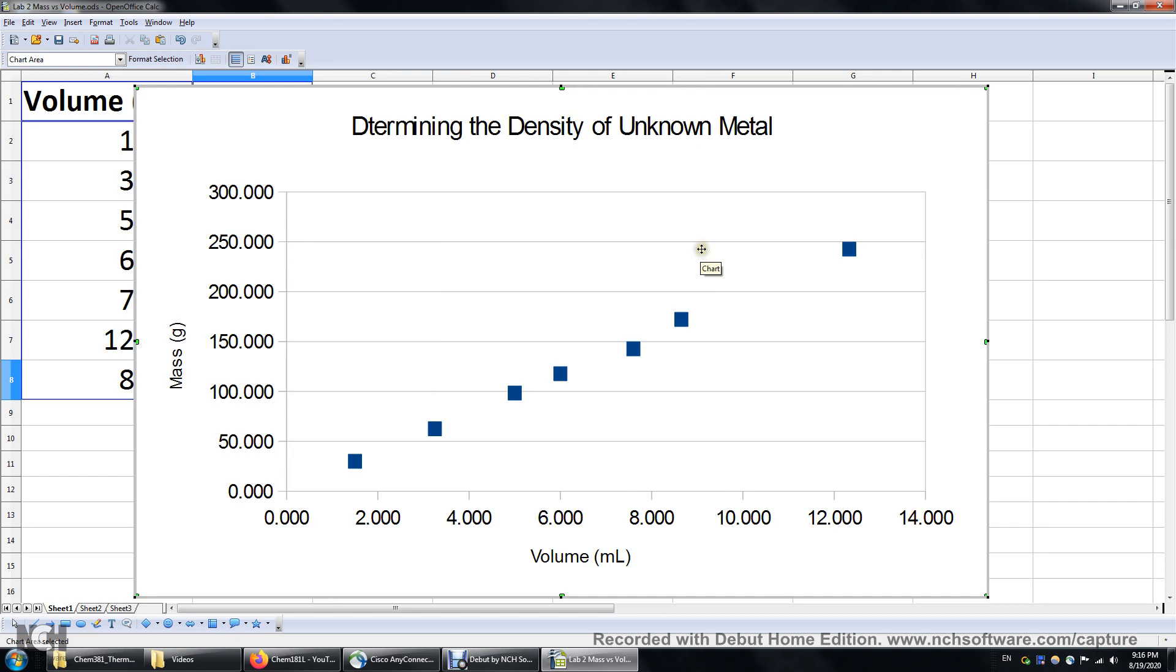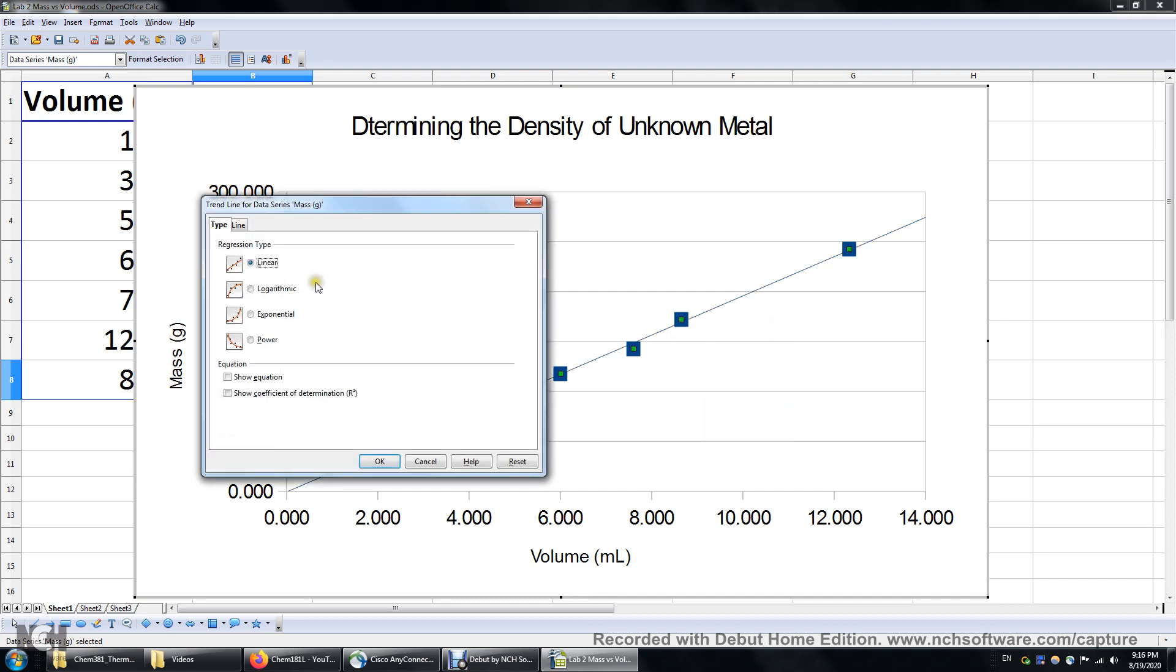Now we'll do a linear regression. Right click any of the seven data points and then insert trend line. It's going to be linear. We will show the equation and the coefficient of determination. We know it's linear because mass equals density times volume. And over here you can change the style and color of the line.